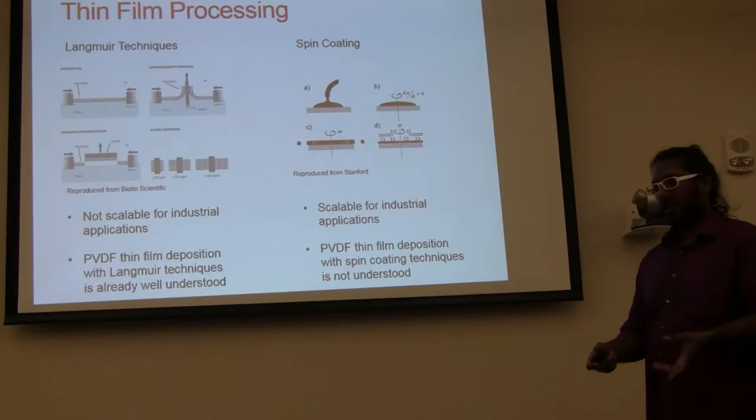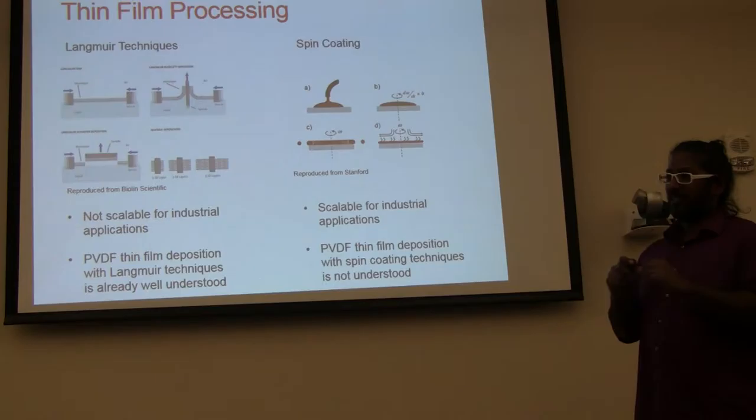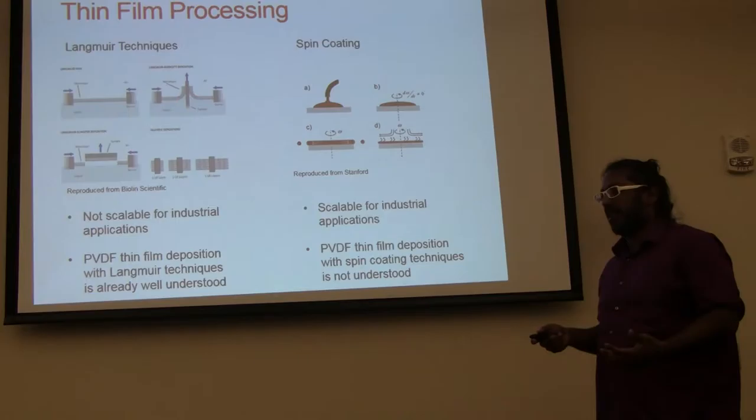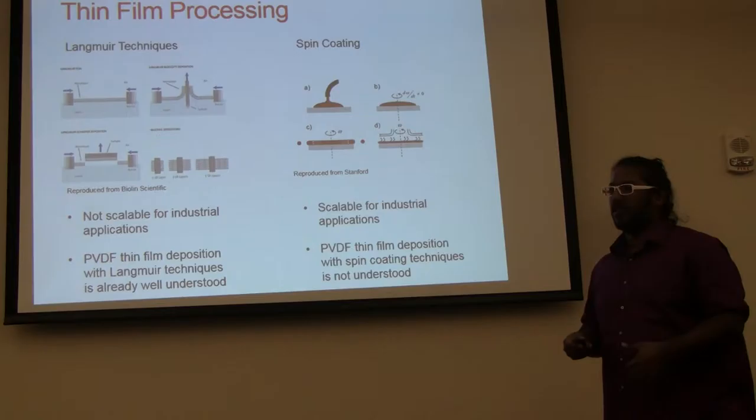Spin coating is a very understandable method. We have a round wafer, we put some liquid on it, and then we spin it really fast. The faster you spin it, the thinner the layer gets, which is basically how spin coating works. This is how Intel and all the other guys put polymers onto anything. They just spin coat. So it's already ready for industrial applications.